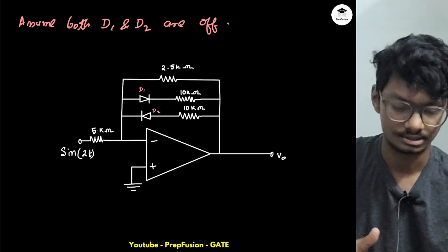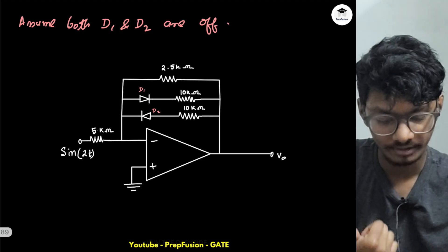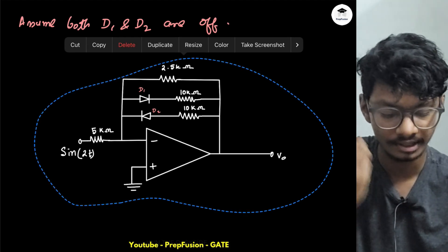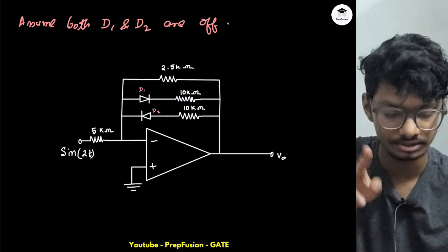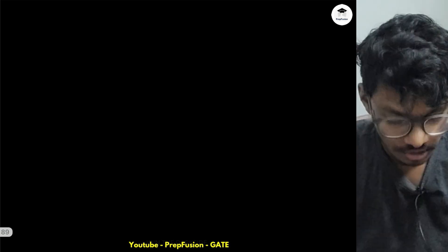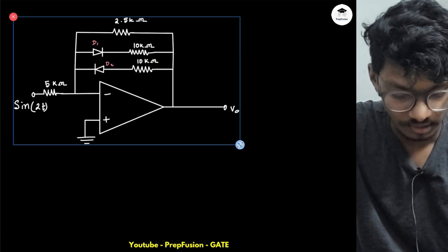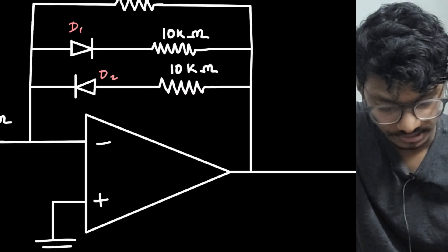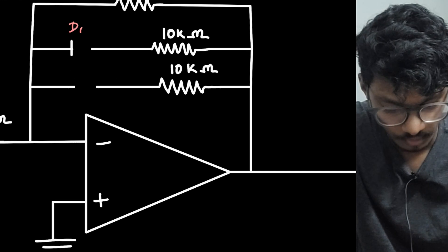Now if they both are off, how will the currents and voltages across the diodes look like? If I turn both D1 and D2 off, both of them will be open circuit.